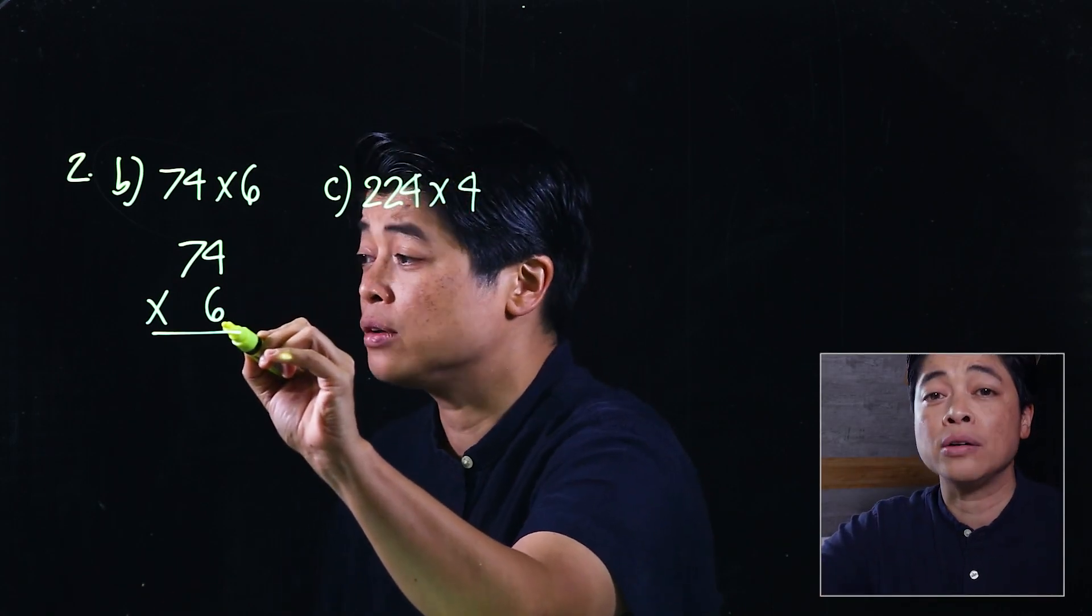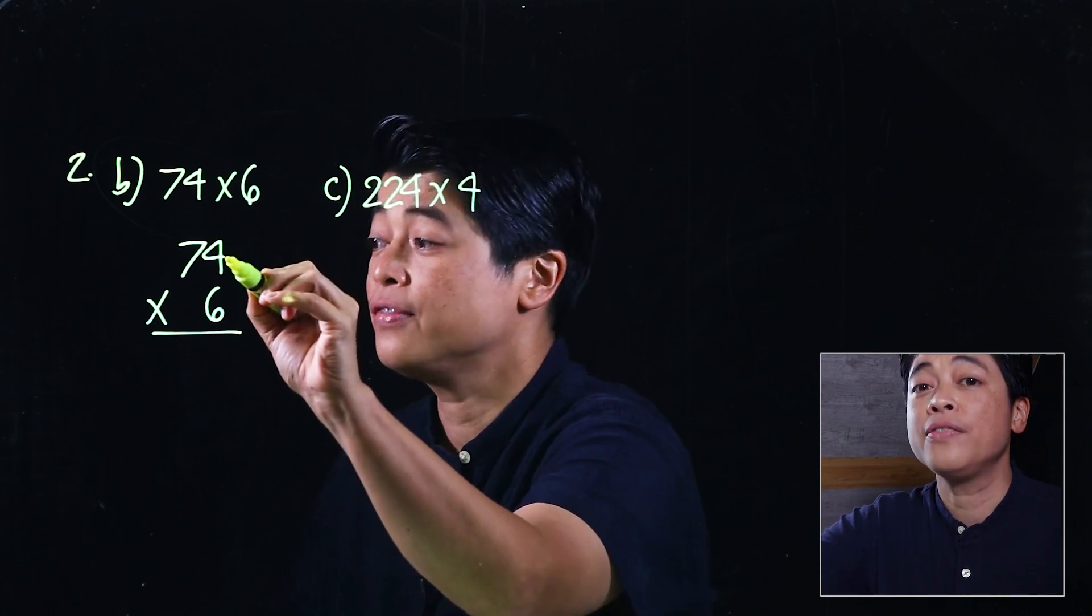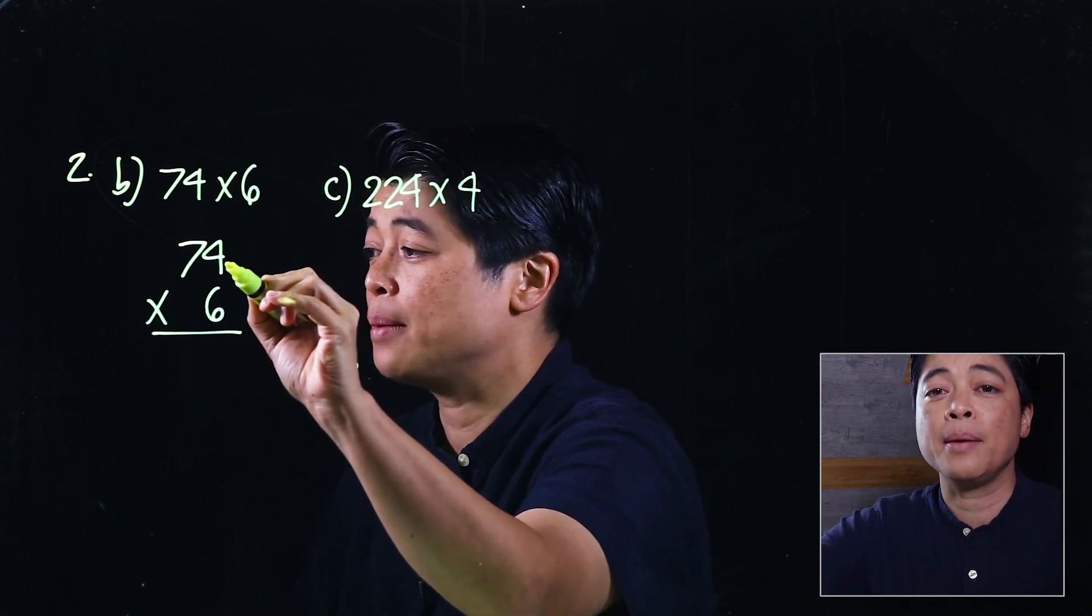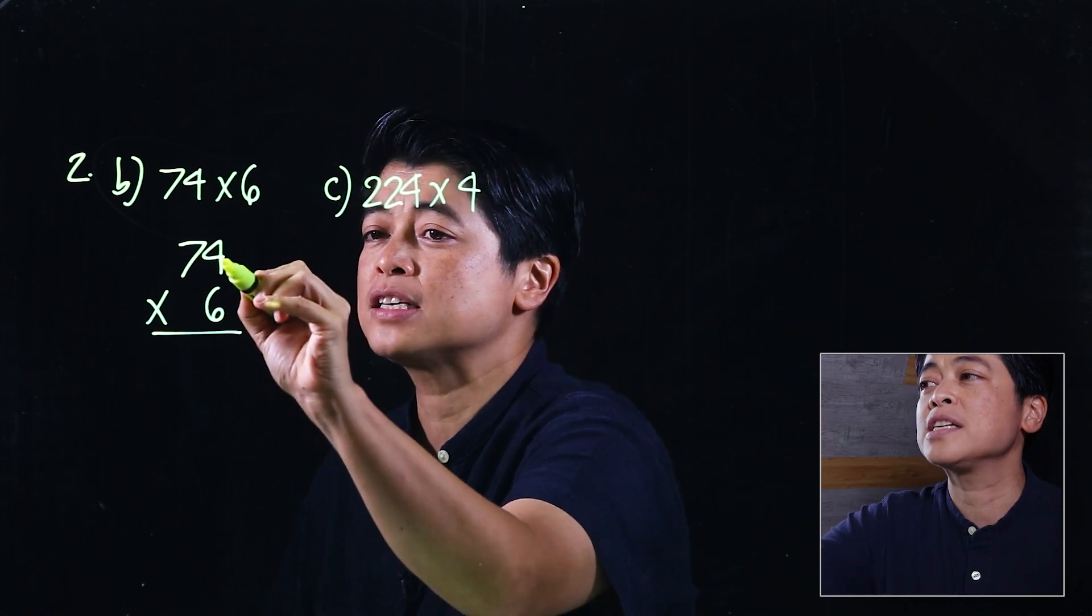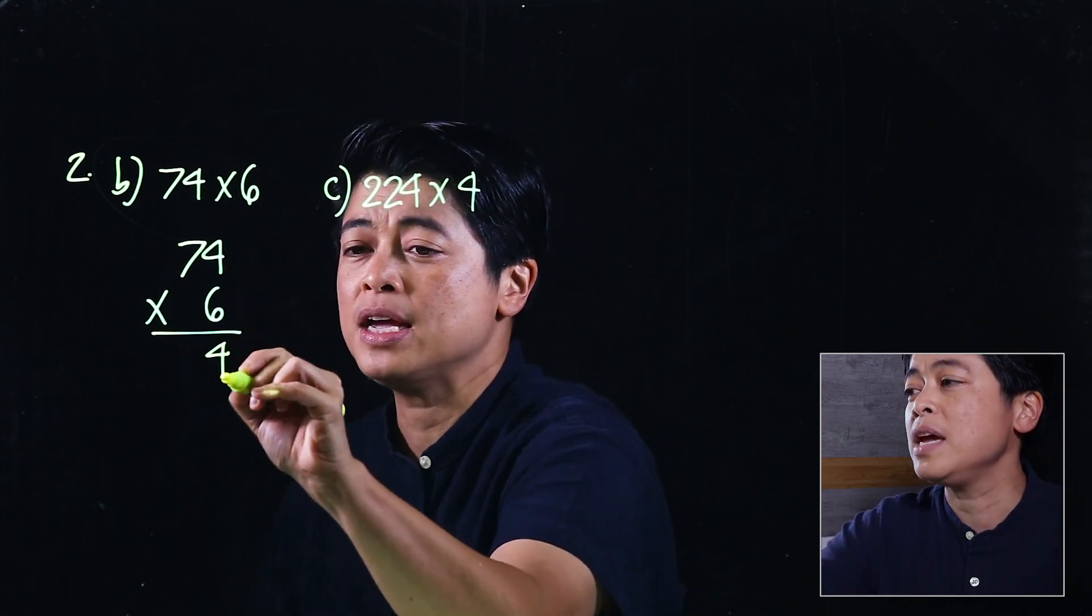The procedure will be we multiply 6 by 4. Remember the kids can count either by 6 or by 4, whichever is easier for them. So if we multiply 6 by 4 that would be 24.